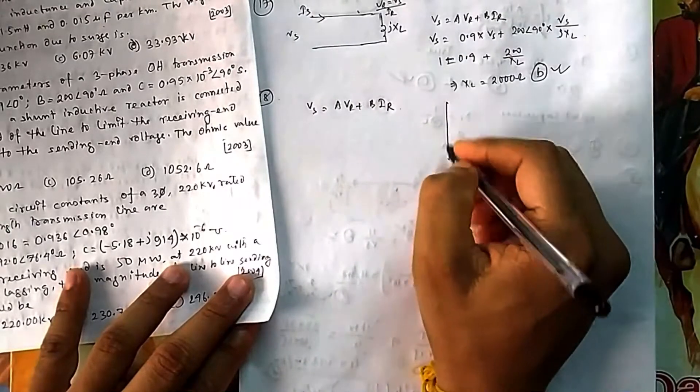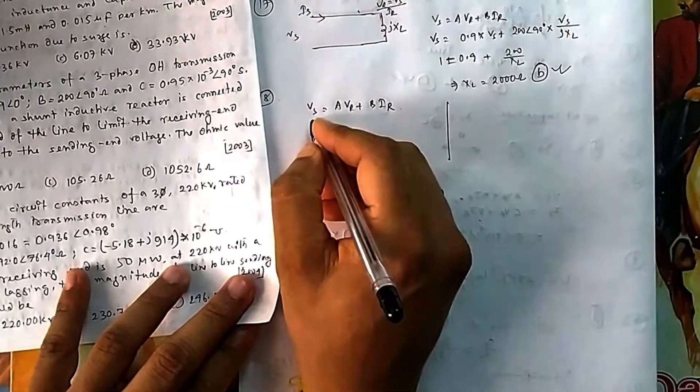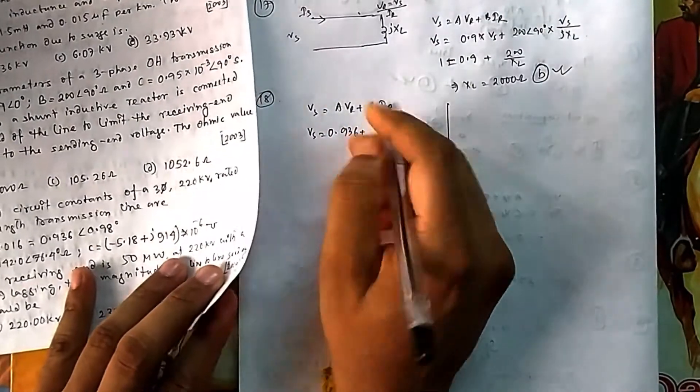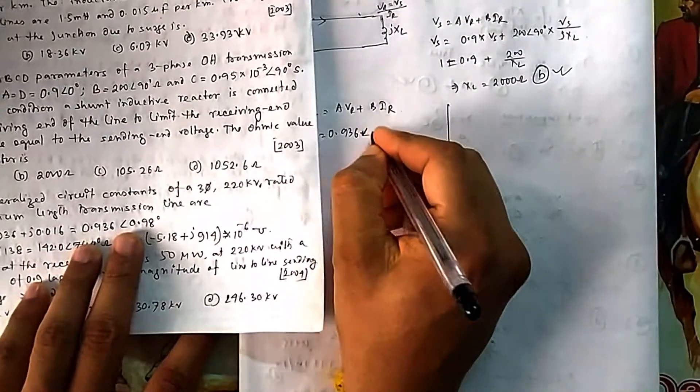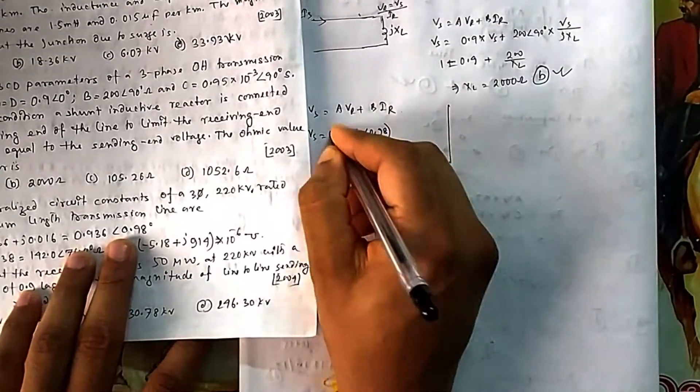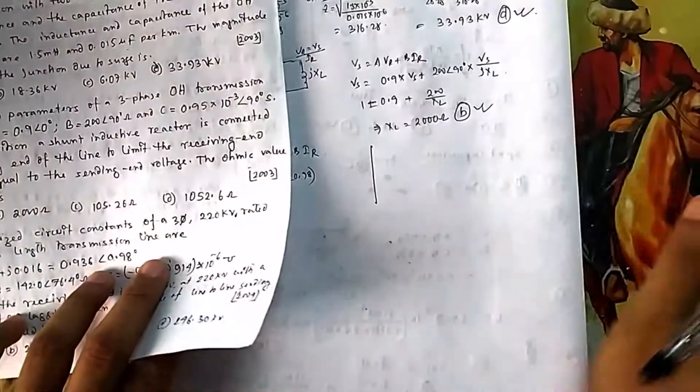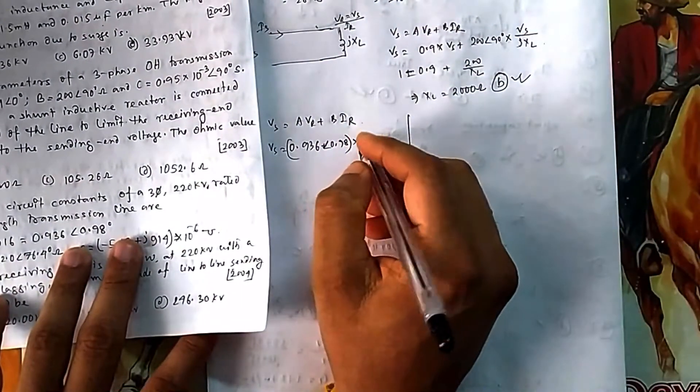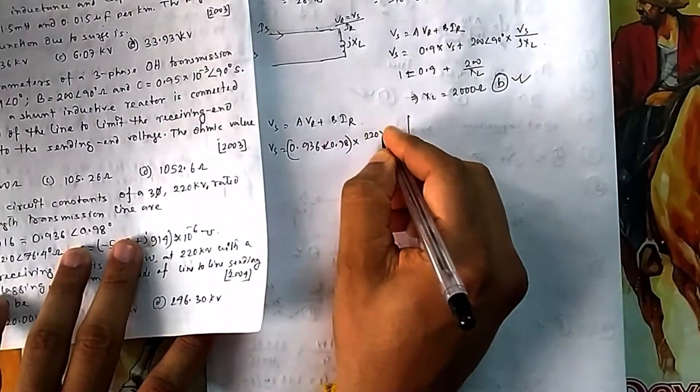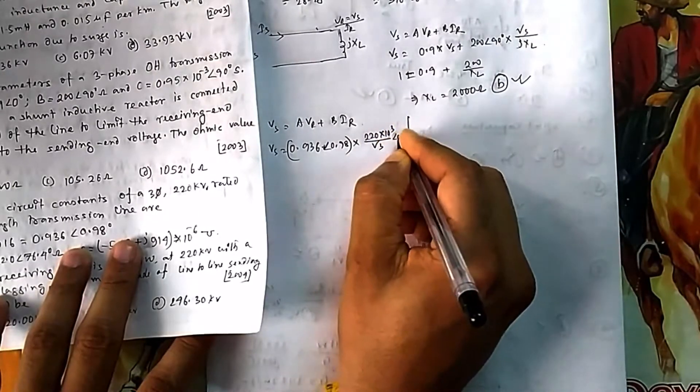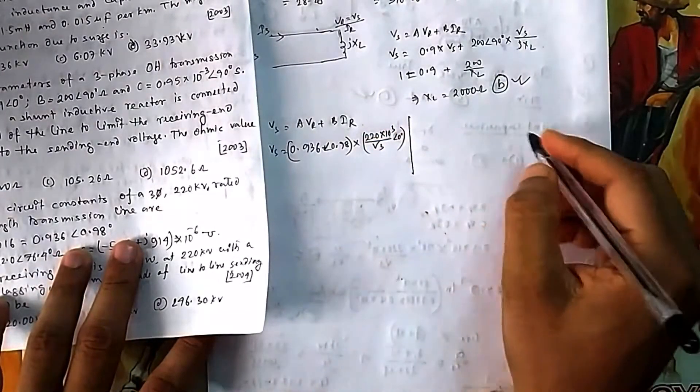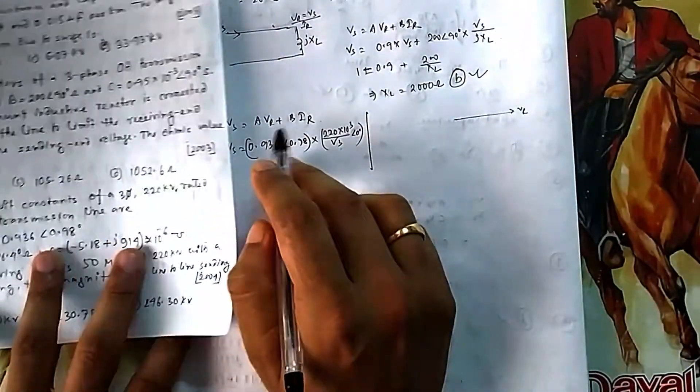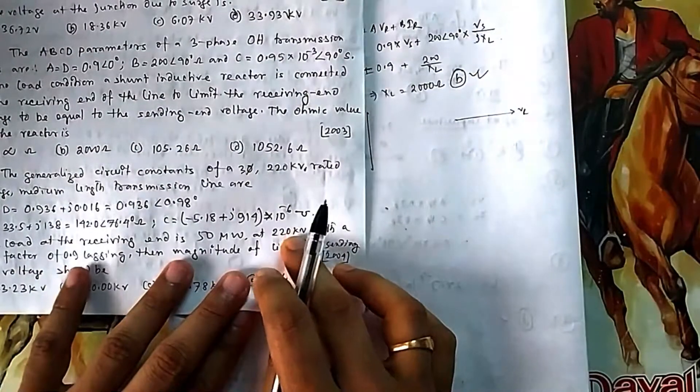Let me calculate Vr. This is Vs = AVr + BIr. Put the values: 0.936 at angle 0.98. For phase calculations, Vr = 220 × 10^3 / √3. Let me take Vr as the reference voltage at angle zero. Why divide by √3? Because nothing is mentioned, meaning it's line voltage. Convert it to phase voltage.